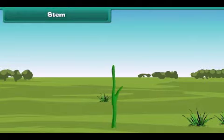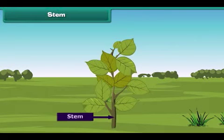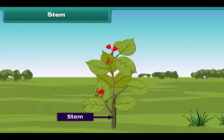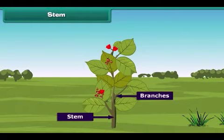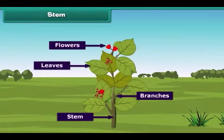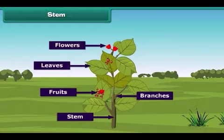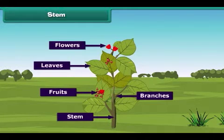Now let's learn about the stem. The stem is the green or brownish part of the plant which grows above the ground. It provides support to the plant and bears branches, leaves, flowers and fruits on its body. In young plants, the colour of the stem is usually green.